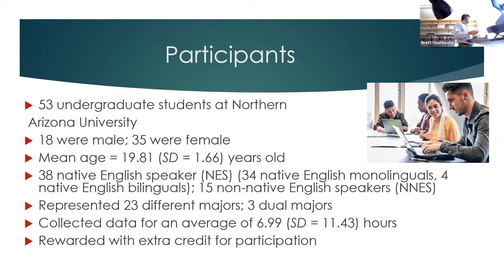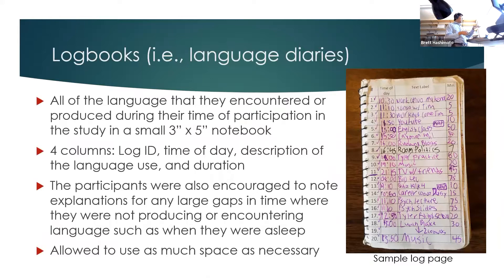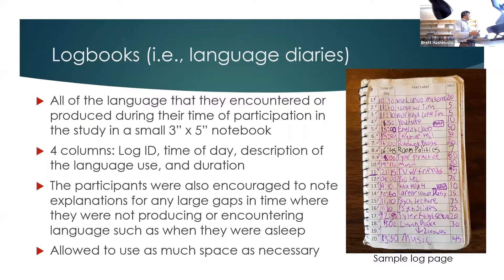Here is an example of what a logbook page looked like. It has four columns: a log ID number, the time of day they were using that language, a brief description of the language so they could remember what it was, and the amount of time in minutes — or seconds if less than a minute. Participants were also encouraged to note any large gaps of time where they weren't using language and were allowed to use as much space as necessary.